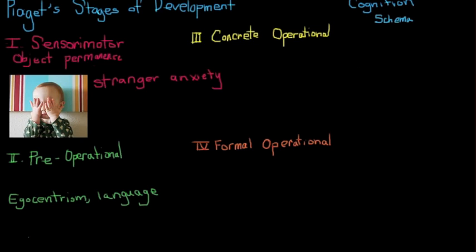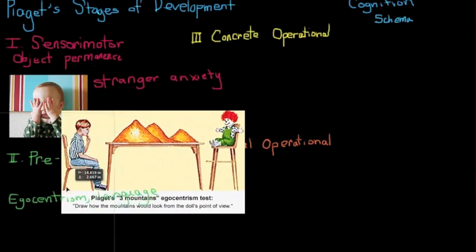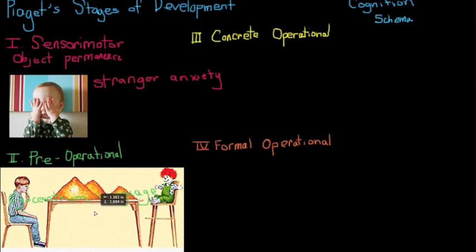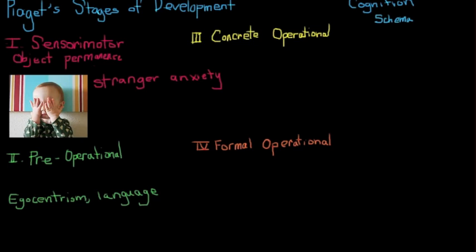For example, here's a picture. Piaget would sit a child and a doll at opposite ends of the table and tell the child to draw the mountains from the doll's point of view. If the child was still in the pre-operational stage and still fairly egocentric, he would be unable to do this. If they were beyond this stage, they would be able to sort of postulate what the doll would be able to see. So that is egocentrism.